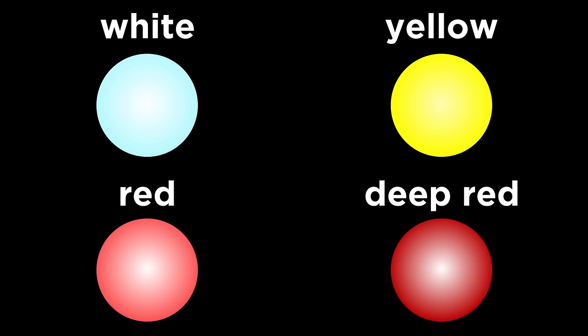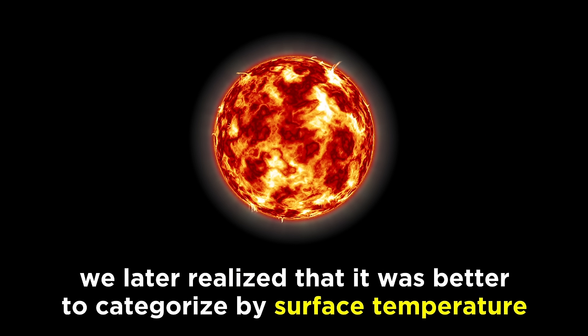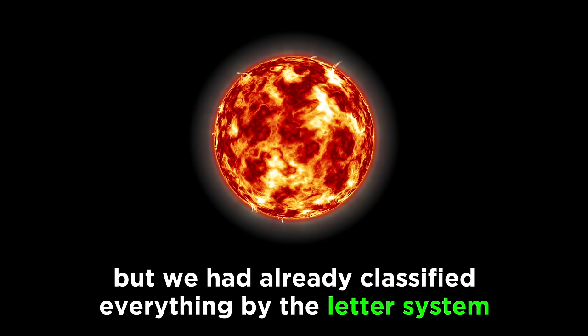When we first started to observe stars in telescopes, we divided them into color classes: white, yellow, red, and deep red. This was later refined, and each color was broken up into letters—A to D for white, E to L for yellow, M and N for red. Later, it was realized that things made more sense if stars were categorized by surface temperature. But this letter system was retained because all the work to classify stars had already been done.